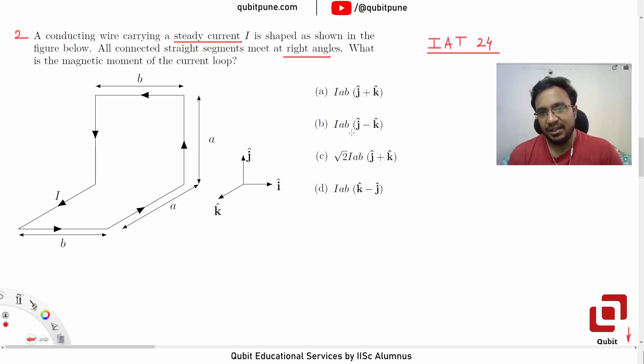The answer options are: (a) I*A*B*(J + K), (b) I*A*(J - K), (c) sqrt(2)*I*A*B*(J - K), (d) I*A*B*(K - J). Let me explain what I, J, K are in this figure.